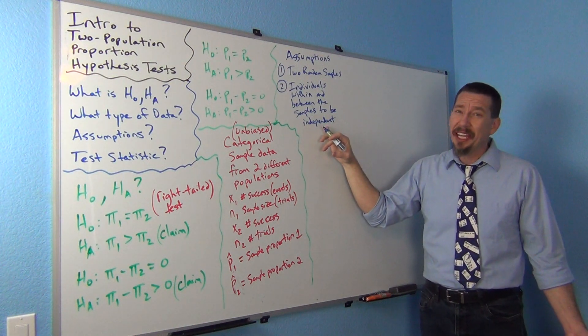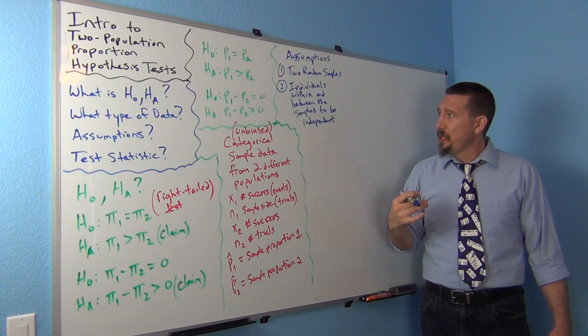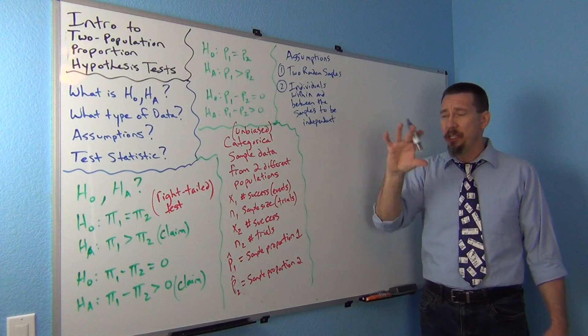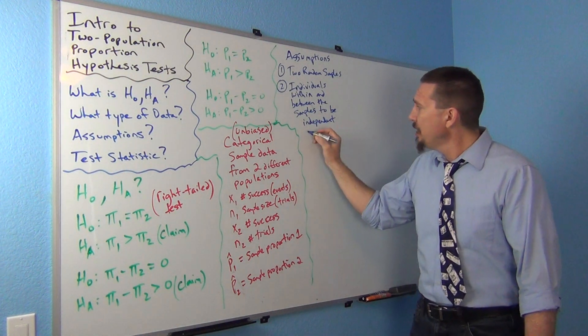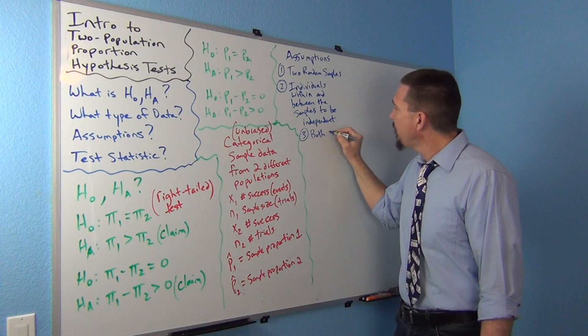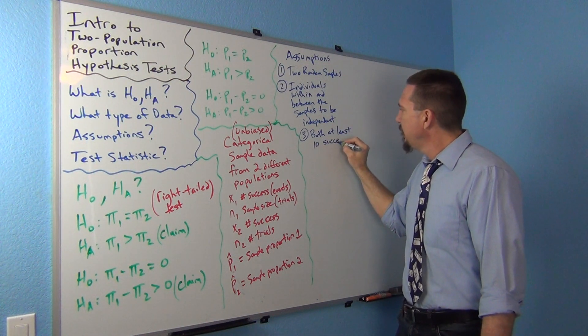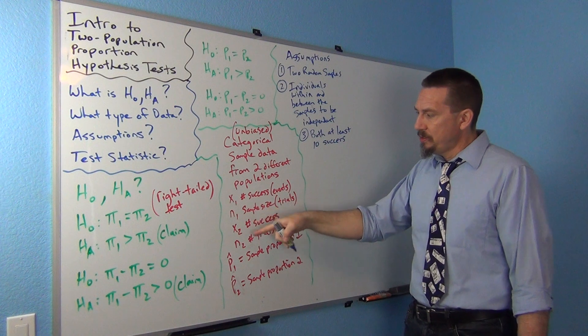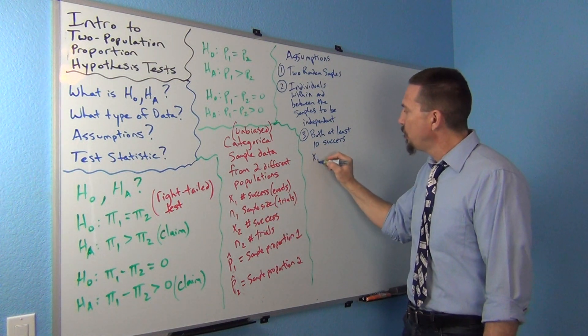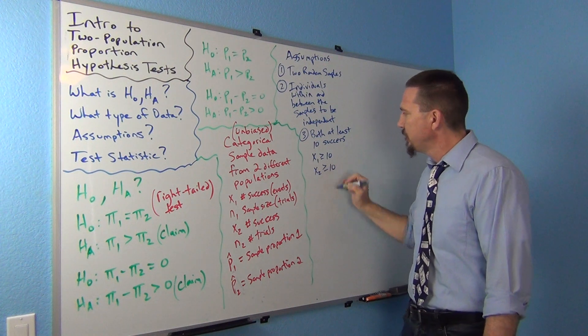But you also have to really think about it - is there any relationship between the people in the data and between the data sets? Three: we need both data sets to have at least ten successes. So if you're using this formula, x1 has to be greater than or equal to ten and x2 has to be greater than or equal to ten.